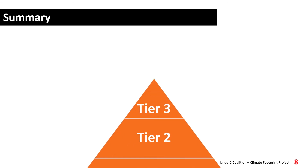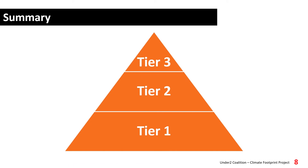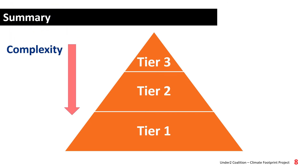So in summary, there are three tiers of approach for the calculation of emissions in an inventory. Tier 1 is the most straightforward and is likely to be the starting point for most inventories. Tier 2 and 3 will be more complex and produce more accurate results. However, a tier 1 approach is still a reliable starting point.